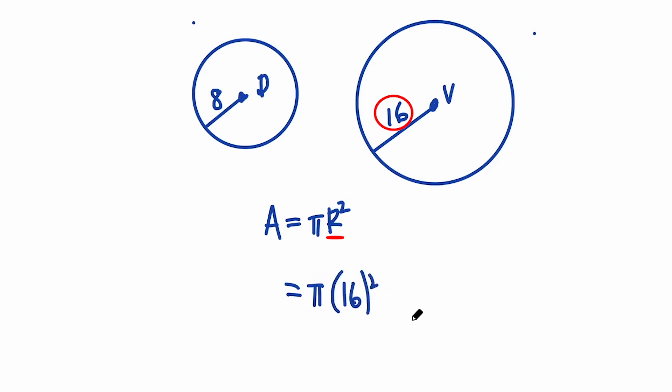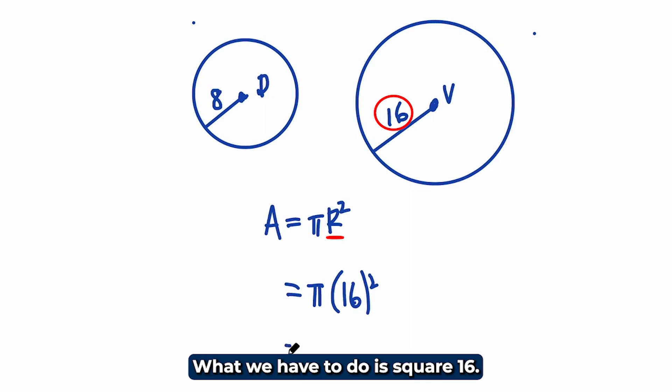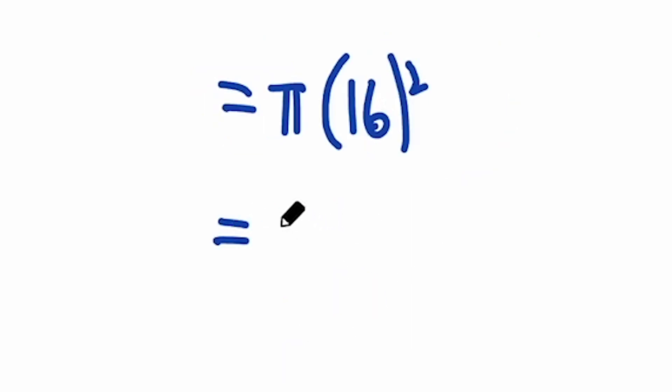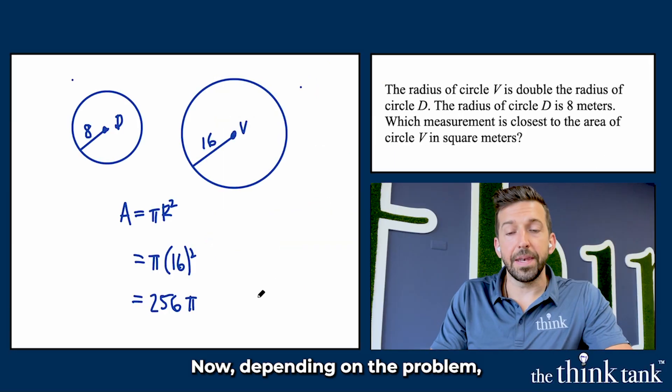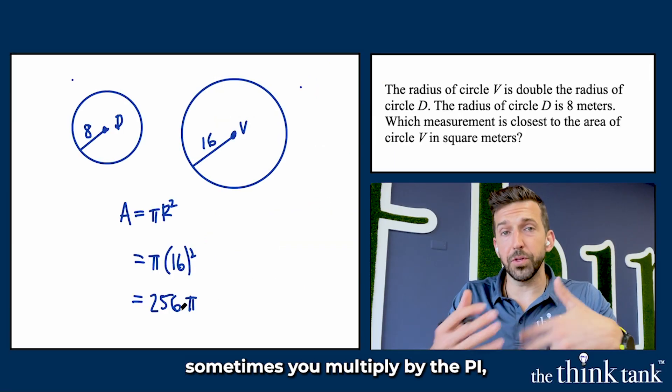What we have to do is square 16—you can use your calculator if you need to—but that's 256, and then that pi hangs around. Now depending on the problem, sometimes you multiply by pi, which is approximately 3.14.